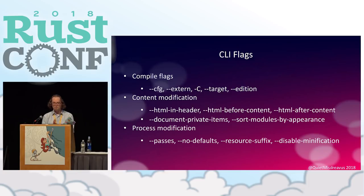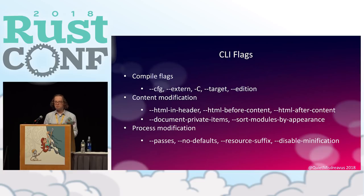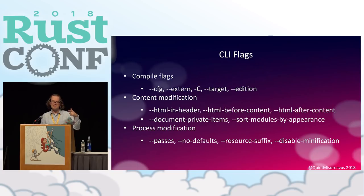In addition to doc attributes, there are also a handful of CLI flags you can use. Of note is the `--document-private-items` flag, which is really nice if you want a separate set of docs for when you're writing on the crate in question. Usually when RustDoc runs, it removes items that are internal to your crate — great if you have a library and want to tell users what they can do with it, but less useful when you're working on the library itself. You can hand RustDoc this flag to look at the internal things.